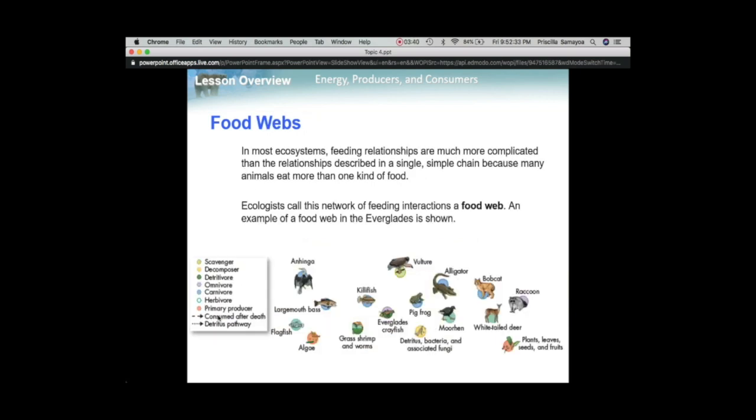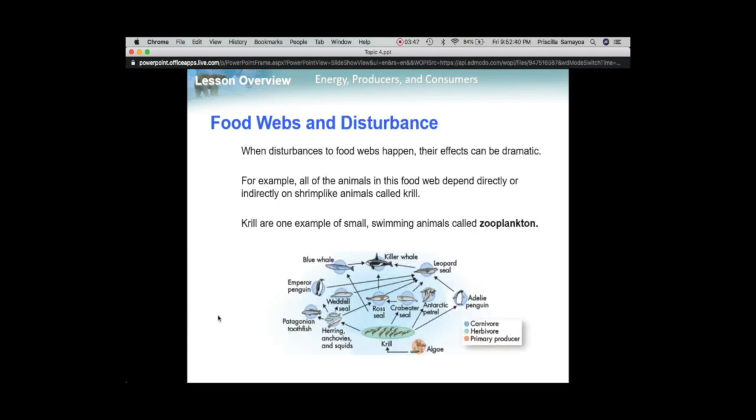The food web is going to be a little more complicated. You're going to have a whole bunch of different things interacting with each other. You can have something being a primary consumer and a secondary consumer at the same time in food webs. Food webs are more complicated; it's not as straightforward as a food chain. One consumer can fill up multiple levels.